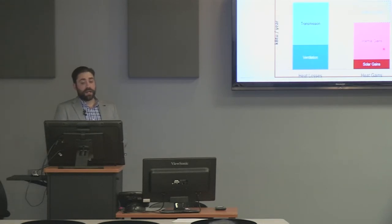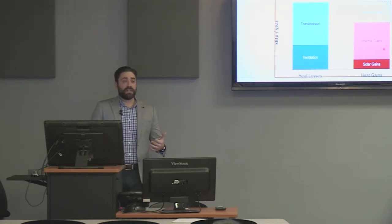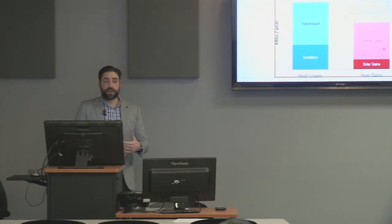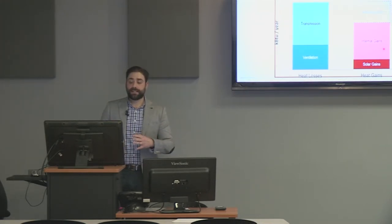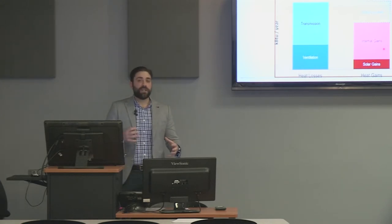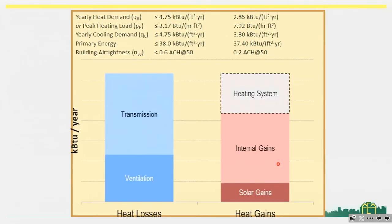Building air tightness is 0.6 ACH at 50 pascals as the Passive House standard, but we're actually shooting for 0.033 CFM per square foot of enclosure, which translates to 0.2 ACH at 50 pascals — a very, very high level of air tightness as our target for this building. The qualitative and quantitative testing we're doing on site is confirming that we're getting close to hitting those targets, so it's going to become a reality very soon.